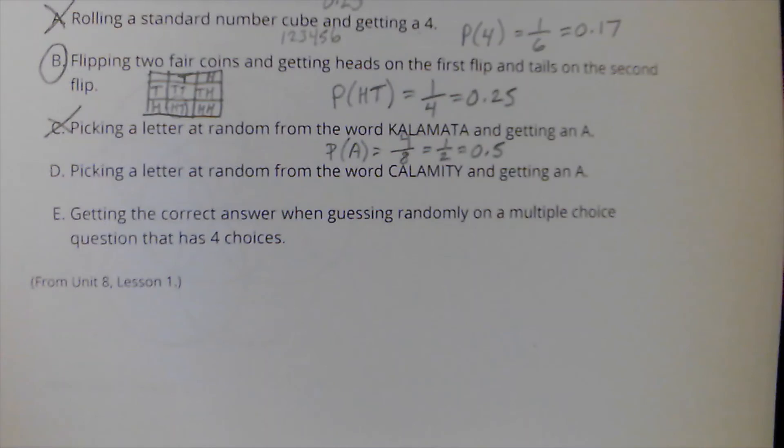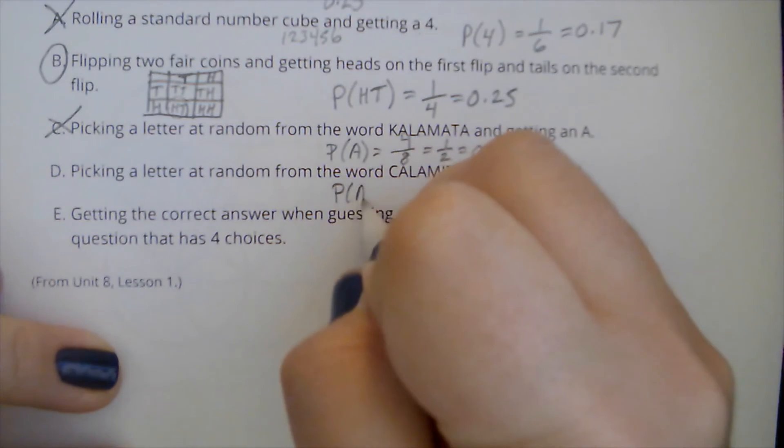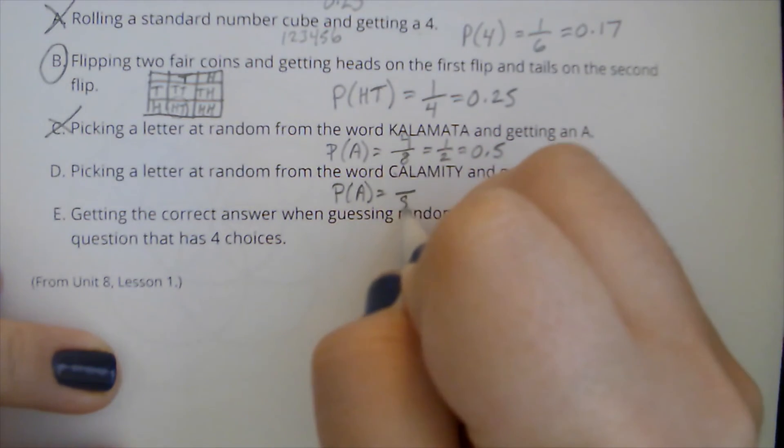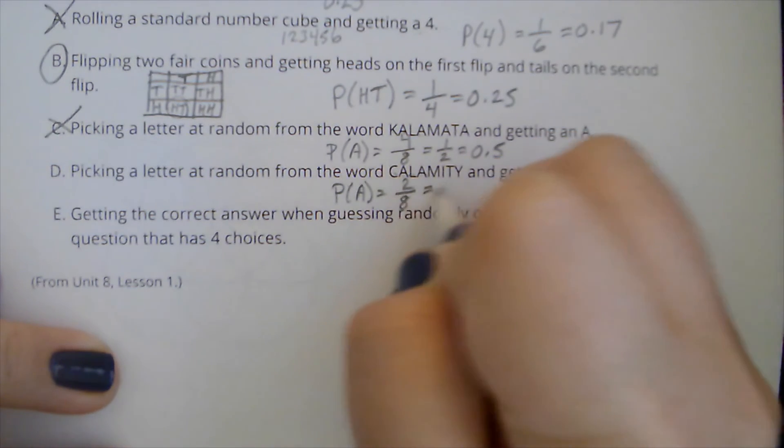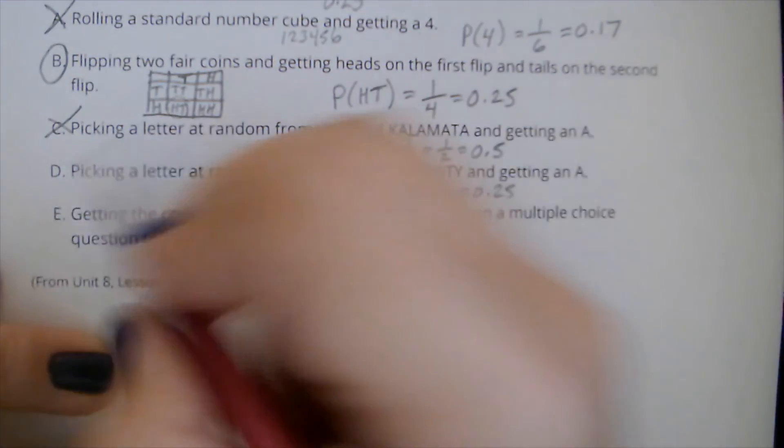And then picking a letter at random from the word Calamity and getting an A. So again, we're going to do the probability of getting an A. One, two, three, four. Again, eight letters. Two of them are A's. Two out of eight is one out of four, which is 0.25. So I'm going to pick this one.